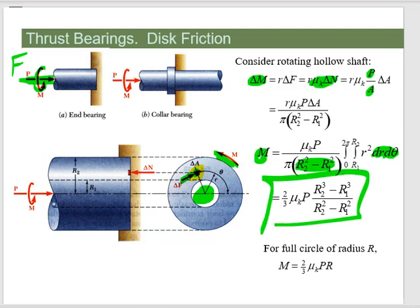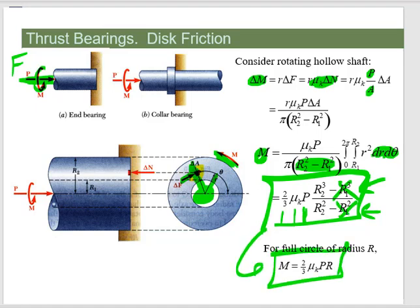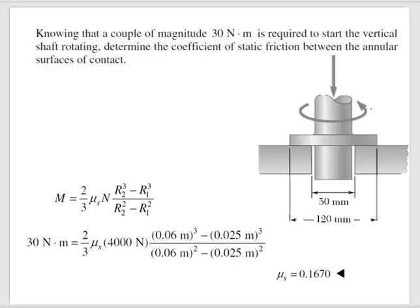The moment is equal to 2/3 times your friction coefficient times the force you're pushing with, and then R2 minus R1 — those are the different radii. If you get rid of R1, it simplifies to the solid-circle equation. This is basically a plug-and-chug if you have the right equation and know your force, moment, and friction coefficient — you can relate everything through this equation.